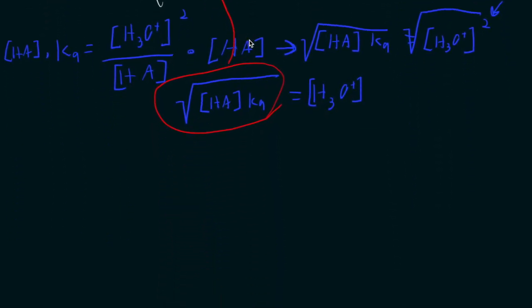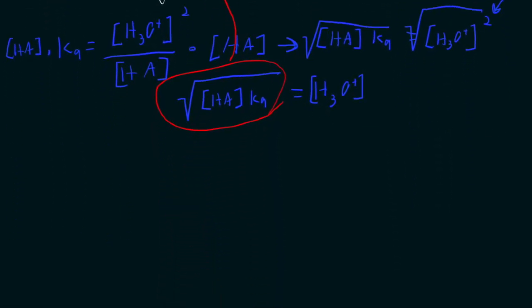So to write this out, the final version, I'm going to take the negative log and I need to put this whole thing in parentheses. You need to be really careful about this when you're plugging this into a calculator. It's really common for people to accidentally take the square root of just the HA and then multiply that by the Ka and then they get the wrong answer. But I can take this whole expression. I can take this whole thing and that will give me the pH.